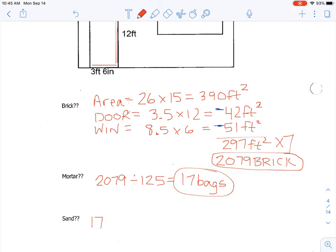And then for sand, for every 8 bags we'll need another ton of sand, so we're going to take our bags and divide it by 8, and I calculate that we need 2.125 tons.